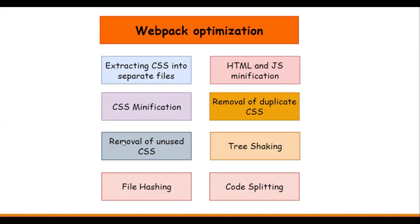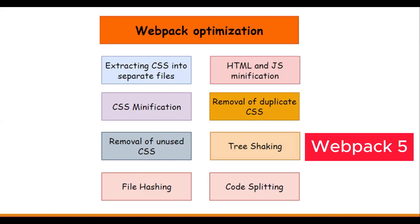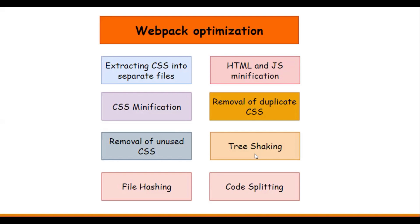After that we saw how exactly the PurgeCSS plugin is used to remove unused CSS, and then we saw how exactly tree shaking works in production mode. Then as part of the last video we saw how exactly we can implement file hashing and how it can benefit us for long-term caching. As part of this video, let's start working on code splitting.